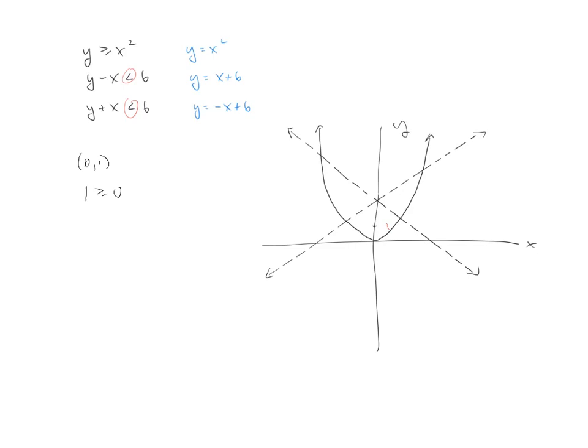Okay? Now, if I look at the positively sloped line, I'll test a point, maybe 0, 0. 0, 0 is not on the positive sloped line. If I go into that, I get 0 is less than 6. And 0 is less than 6. Which means that for the positively sloped line, I'm going to be underneath it.